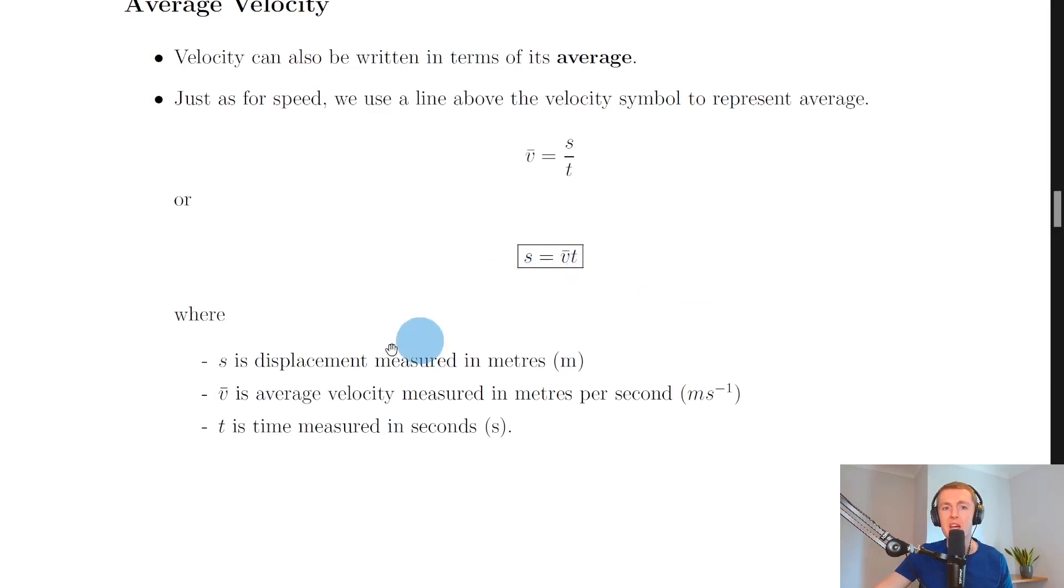Where s is displacement measured in meters, v̄ is average velocity measured in meters per second, and t is time measured in seconds.